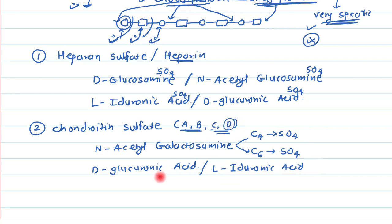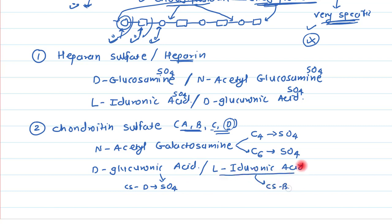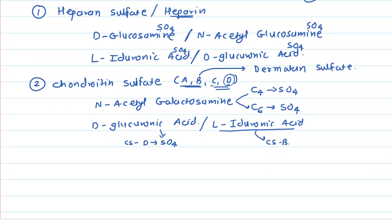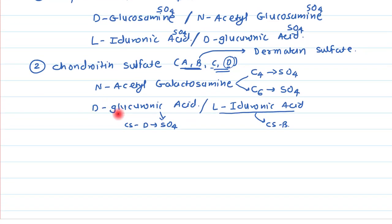D-glucuronic acid is present in chondroitin sulfate A, C, and D. In chondroitin sulfate B, however, it is L-iduronic acid. In chondroitin sulfate D, the glucuronic acid is sulfated. Chondroitin sulfate B is also known as dermatan sulfate, found mainly in skin where it is responsible for skin pliability.